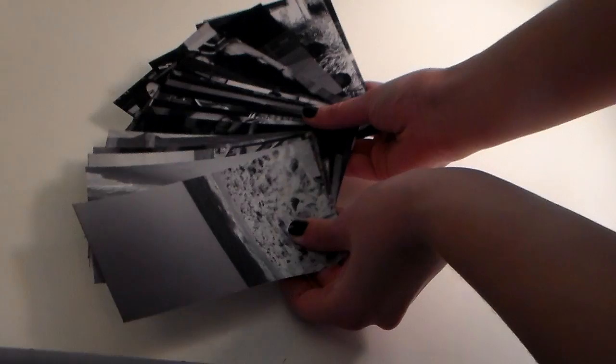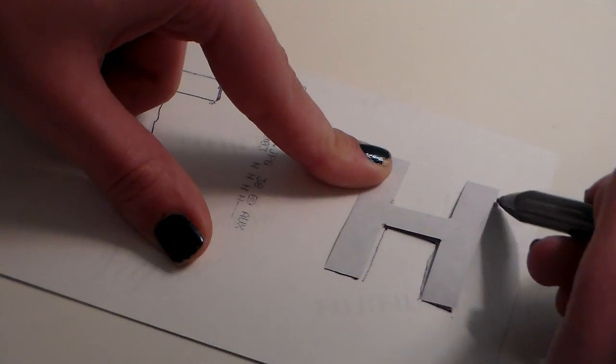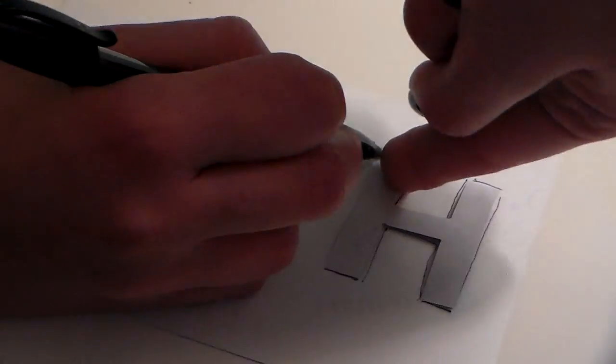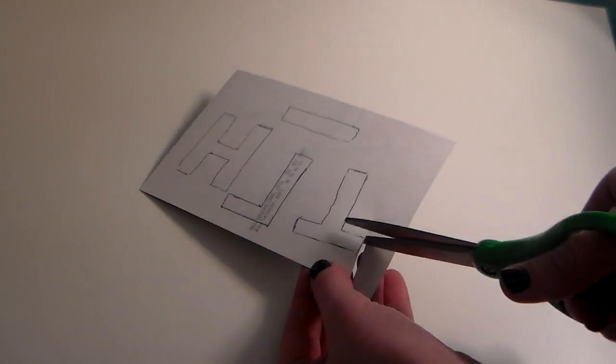I had all these black and white photos, so I traced the letters onto the back. Make sure the letters are backwards because otherwise you'll just have the back of a picture and that will be awkward. Then I cut them all out.